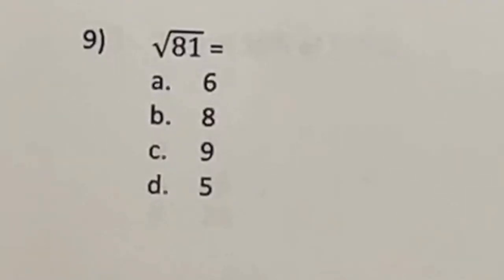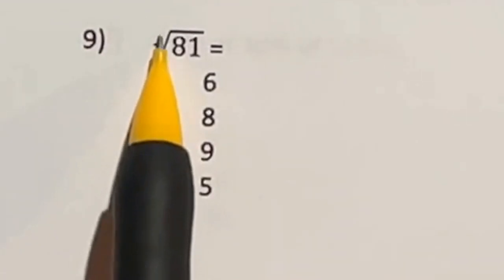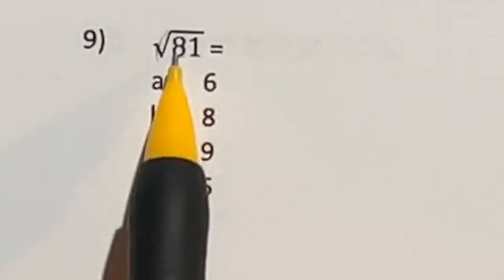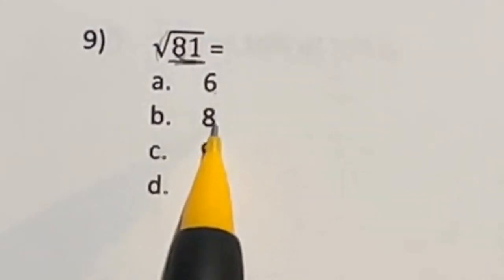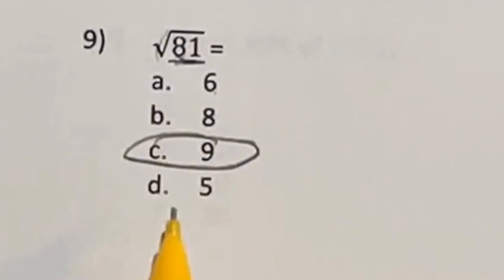What is the square root of 81? If you haven't seen this before, it means what number times itself would give you this number? Six times six is 36. Eight times eight is 64. Nine times nine is 81. So that's our answer, and five times five is 25. So answer is C.